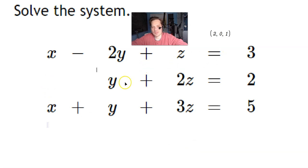Let's solve the system: x minus 2y plus z equals 3, y plus 2z equals 2, and x plus y plus 3z equals 5.